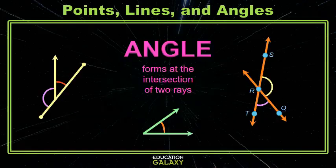An angle forms at the intersection of two rays. The point of intersection is called the vertex. In this image on the right, you see a few different angles marked. We can identify those two different angles by letters. They both have the vertex R.